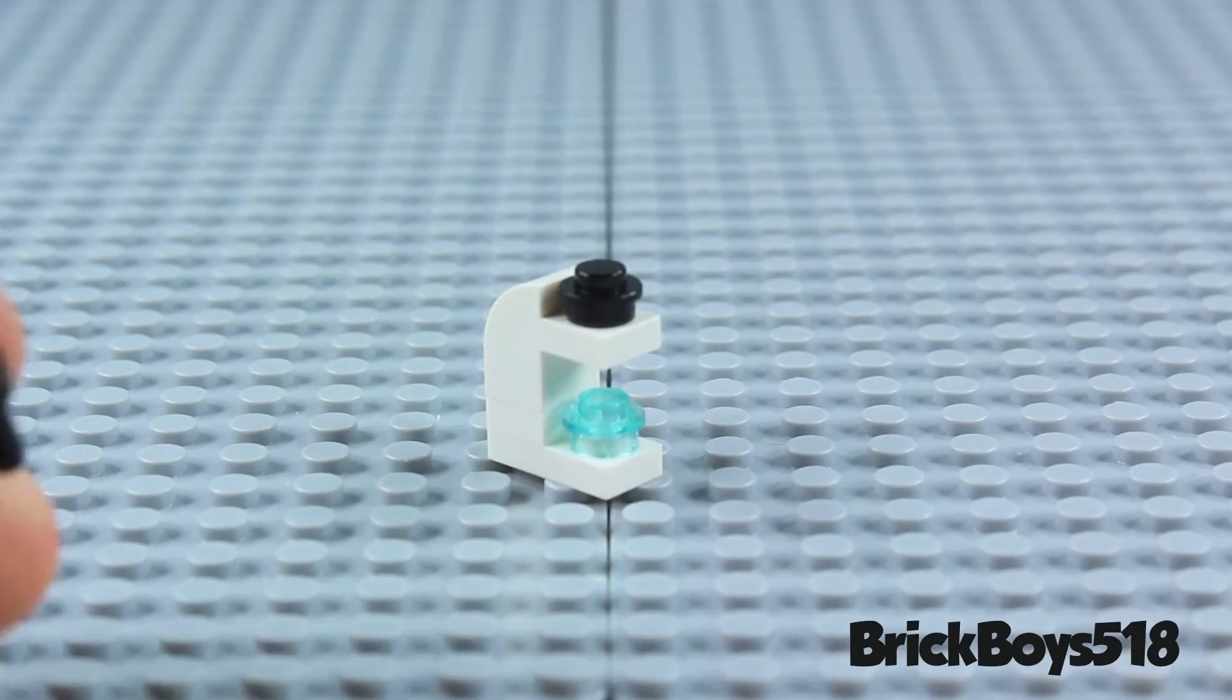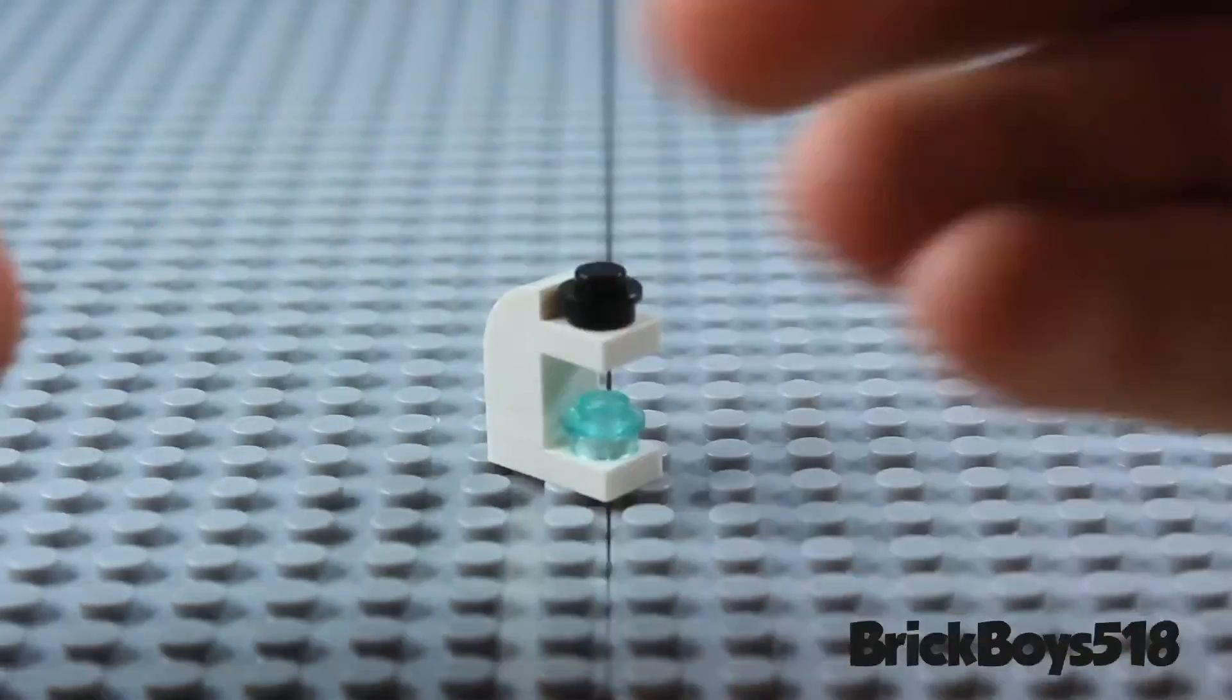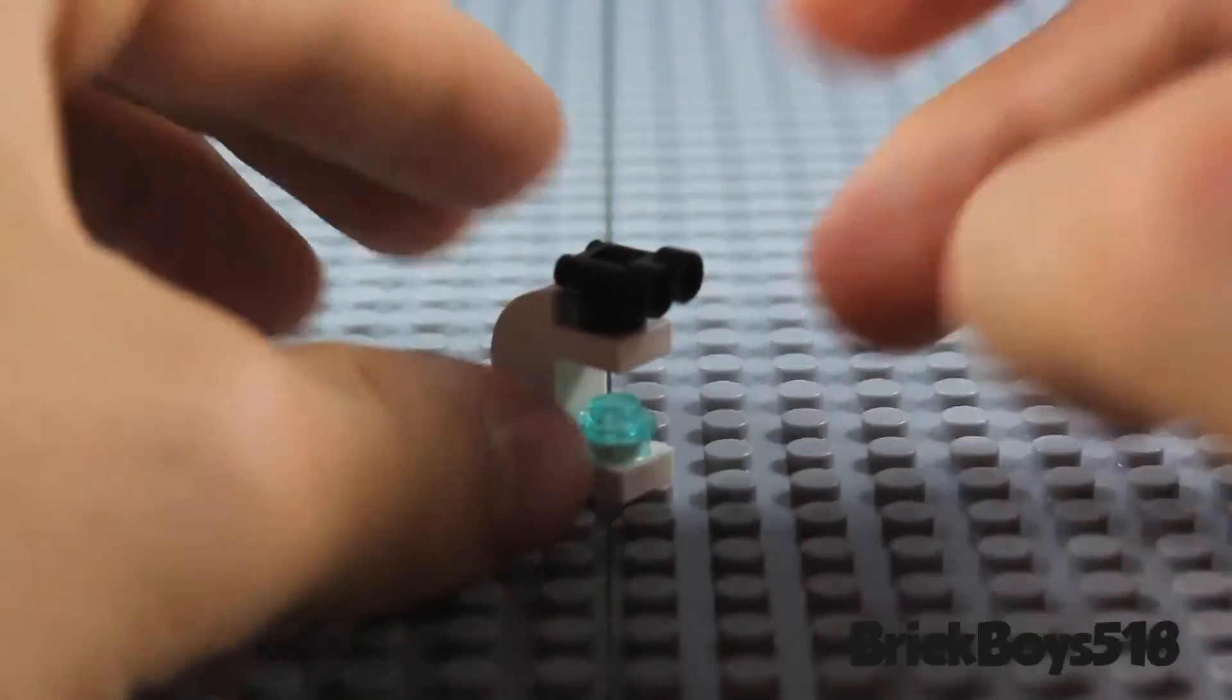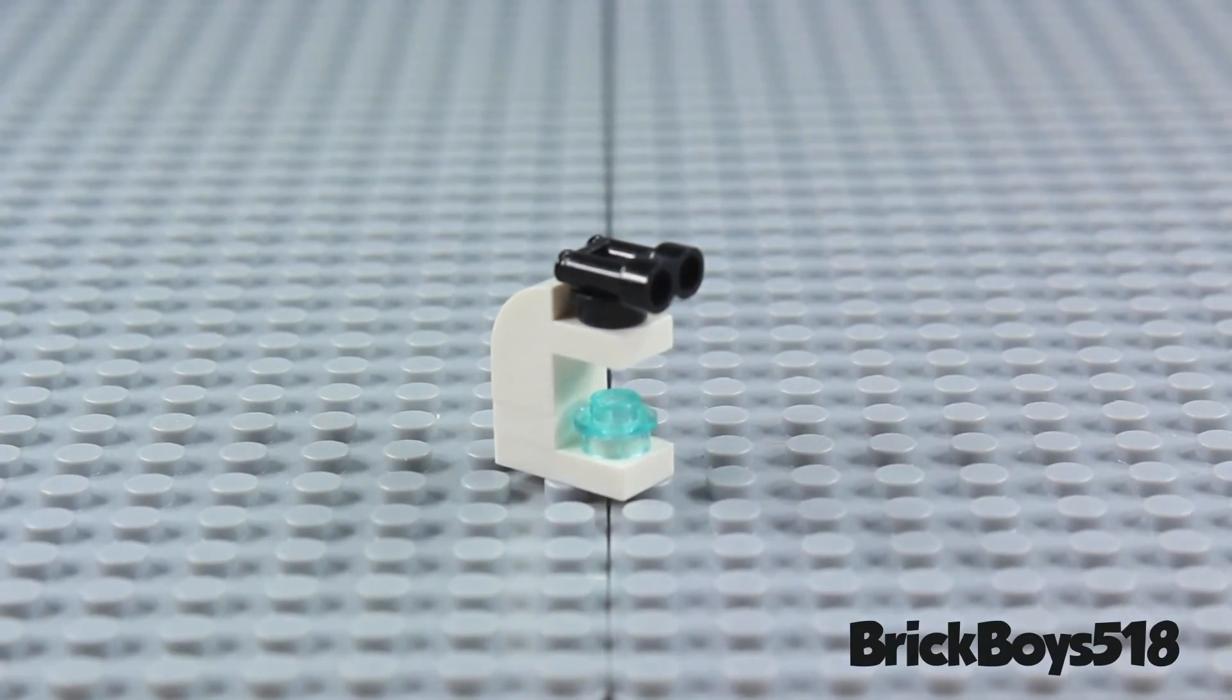And then finally you're going to take a pair of binoculars. And I'm using black to match the stud that I put on. And you just pop them right on the top. Like that. And that is your microscope.